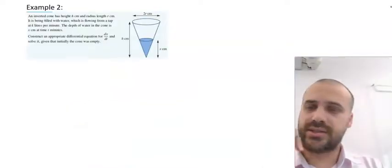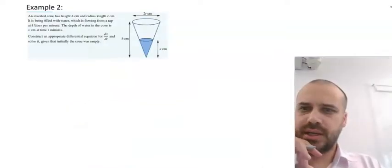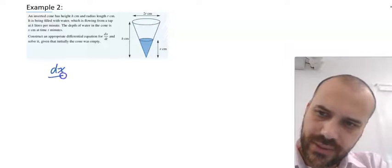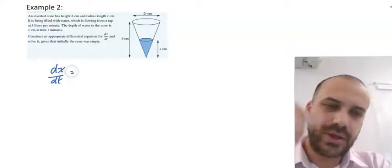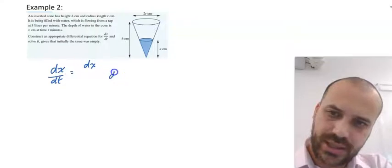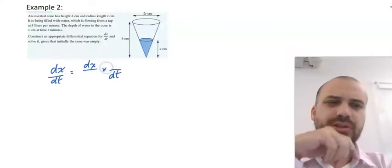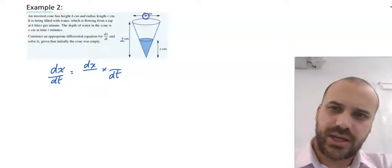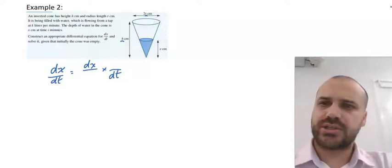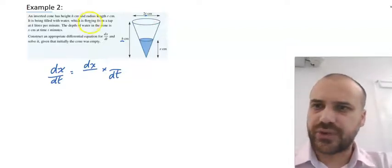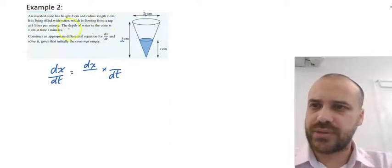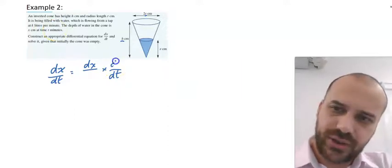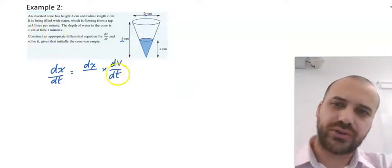This is a more complicated example. Now we're looking for construct an appropriate differential equation for dx/dt. We know it's a related rates problem, so we're going to end up with dx here and dt here. And then it's a little bit confusing as to what our other variable should be. Should it be h? Should it be r? If you read the question itself, you're given a flow rate. It's being filled, which is flowing from a tap at k liters per minute. So that's going to be our other variable. It's going to be volume, because we're being told volume with respect to time.